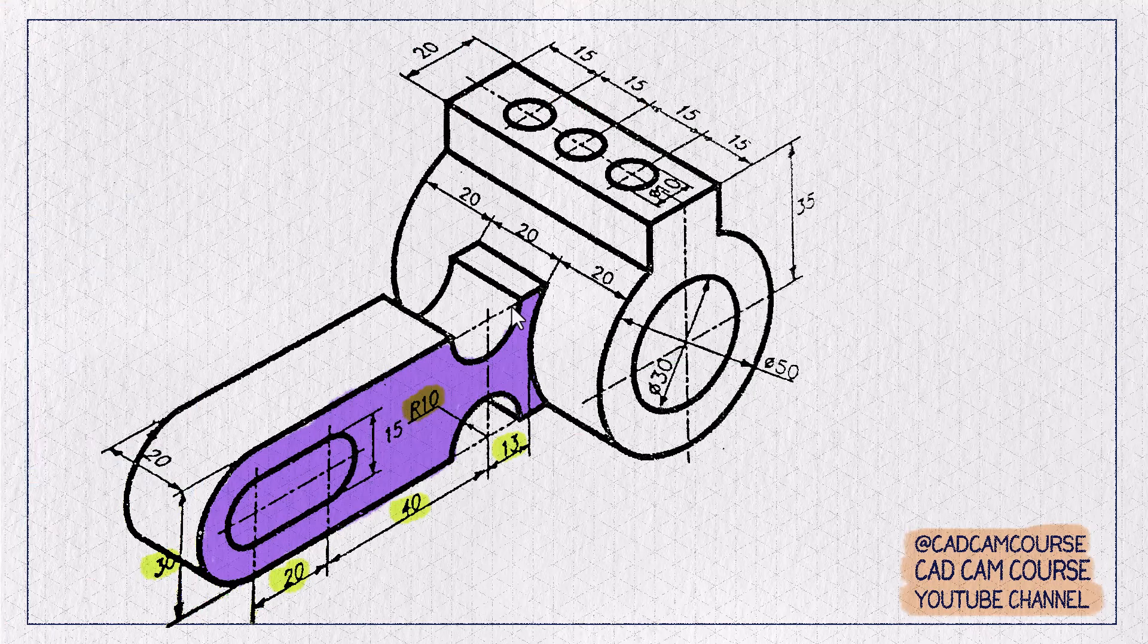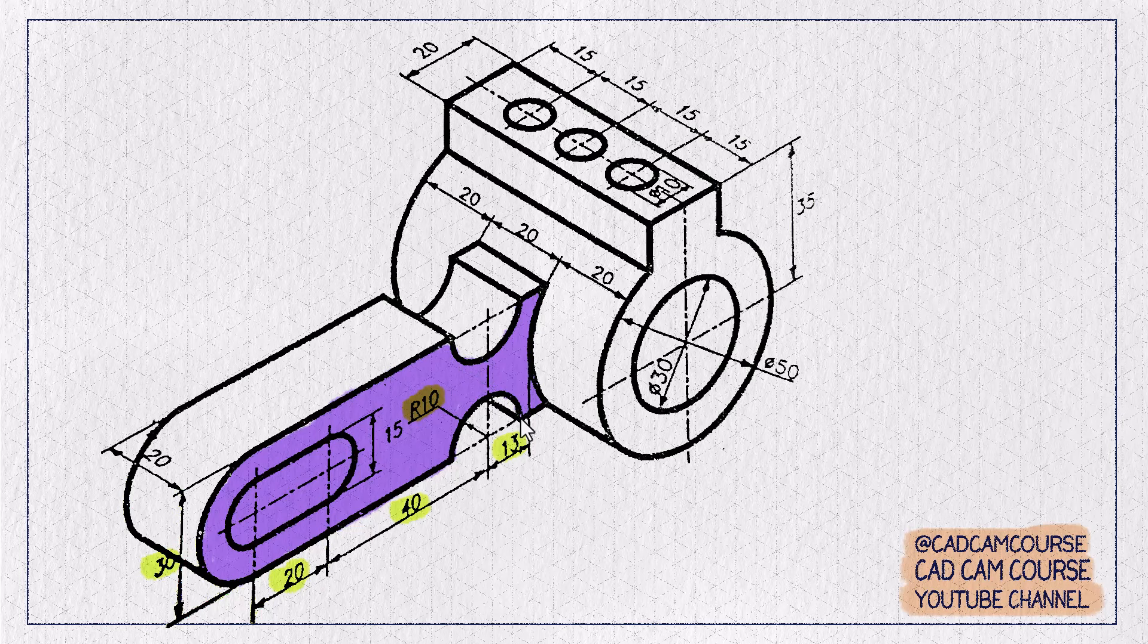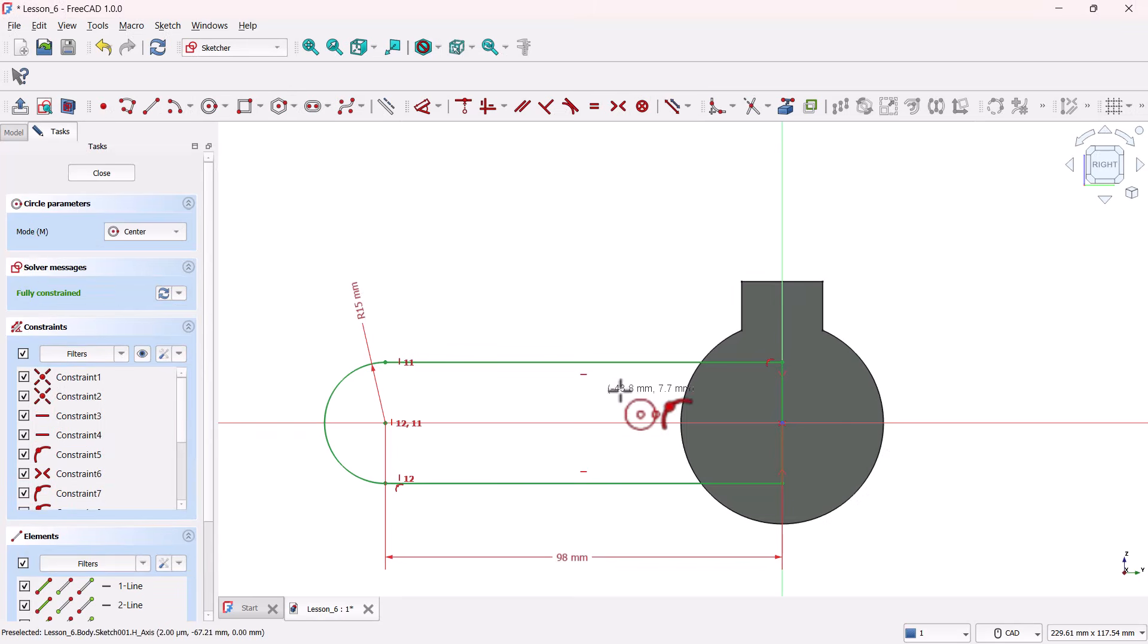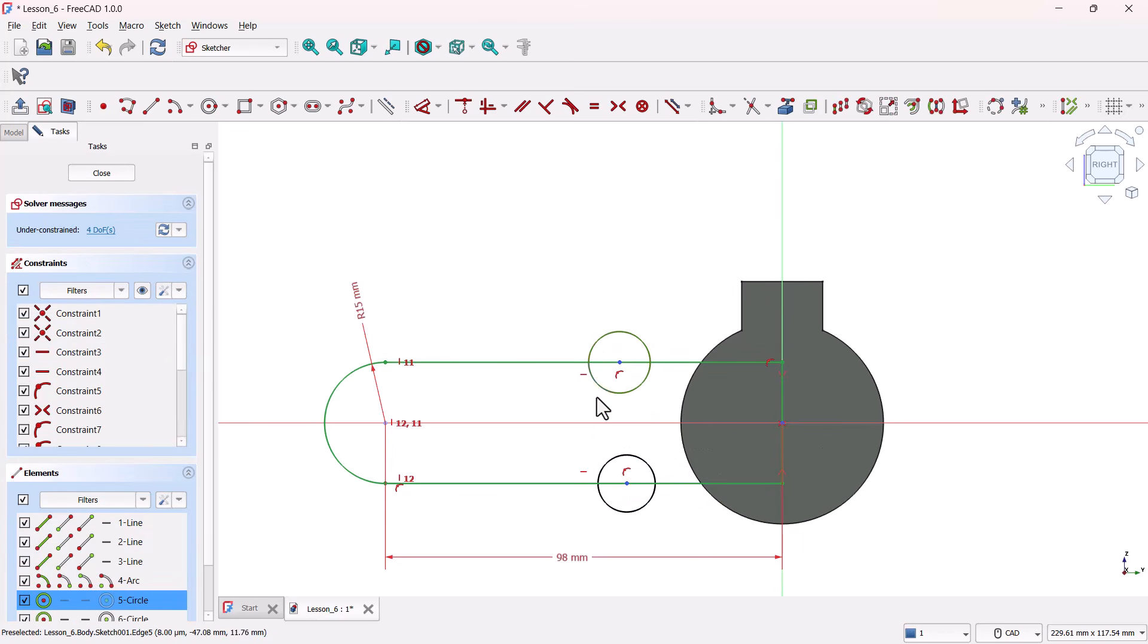Alright, now we will add these two semicircles on the sides. Grab the circle tool again, and place the centers right on the edges here. Just click and drag to rough them out. Now, select both circles and apply the equal constraint. This ensures they're identical twins of same size.